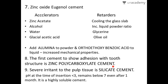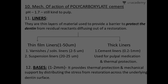The severe irritant to the pulp is silicate cement. When the cavity is prepared very close to the pulp, we ideally prefer not to use silicate cement as a base because it will provide irritation to the pulp. Its pH at the time of insertion is less than 3 — highly acidic — and it remains below 7 even after one month. Silicate cement is also highly soluble; its only advantage is that it releases fluoride rapidly.